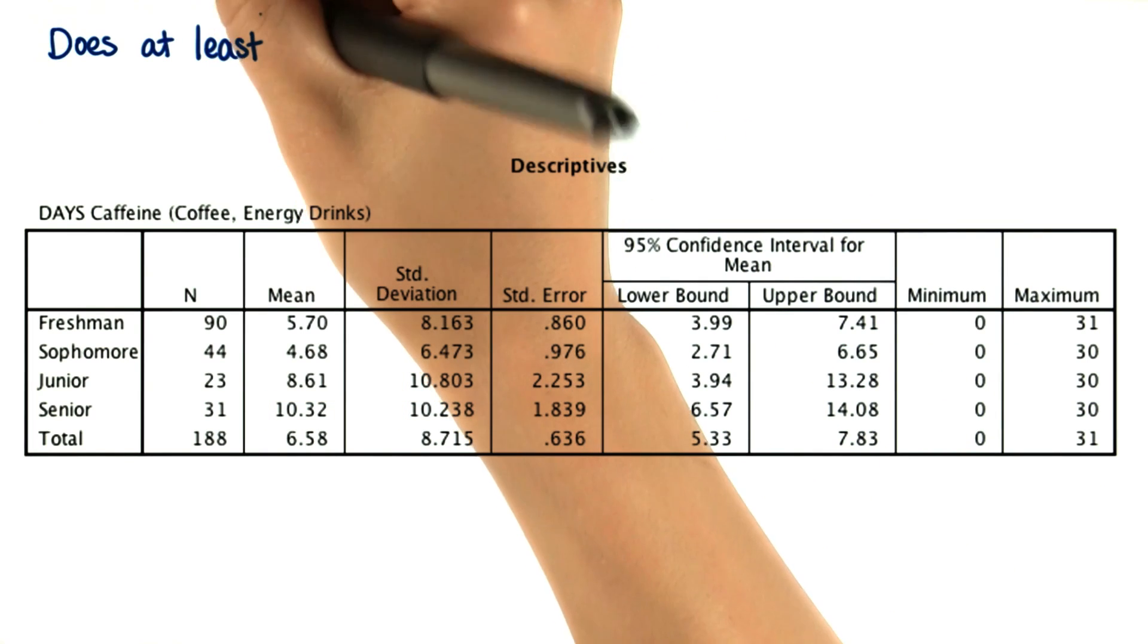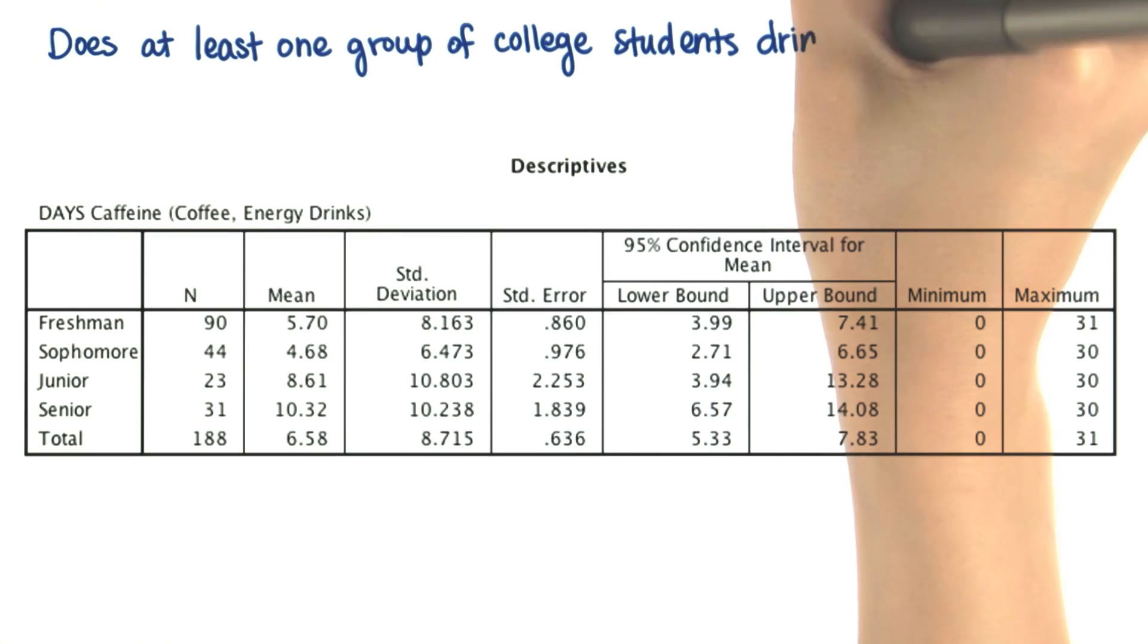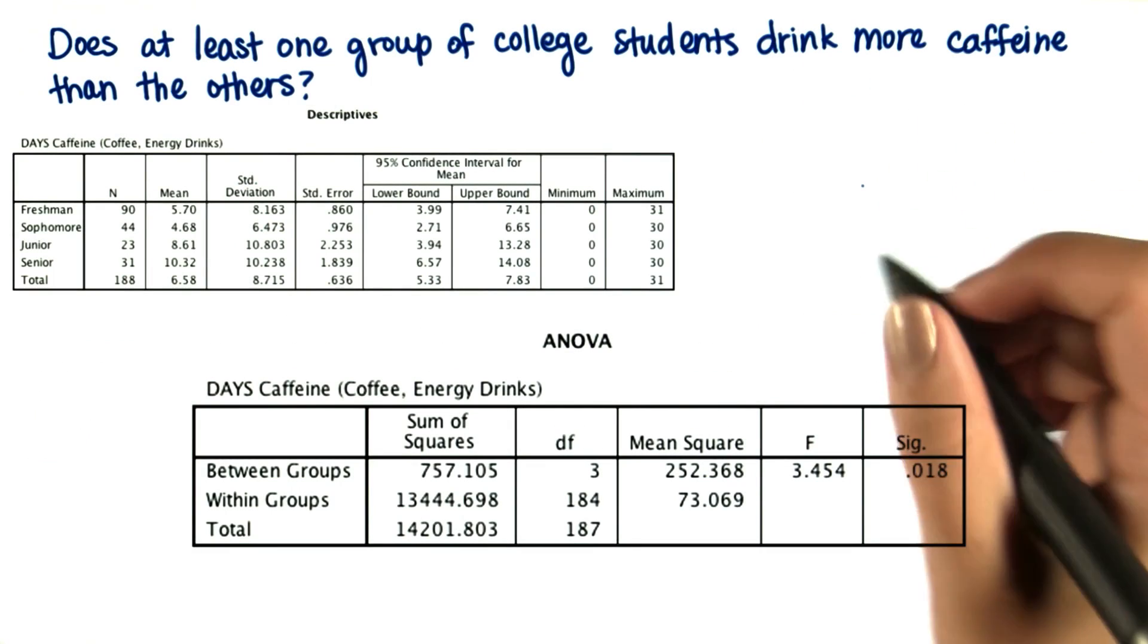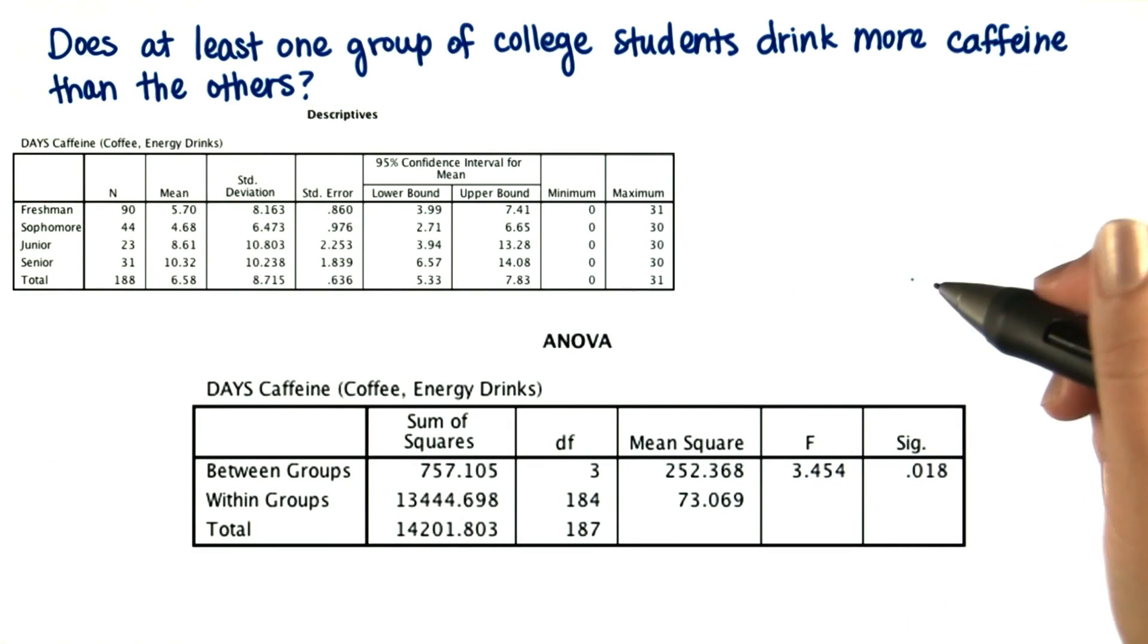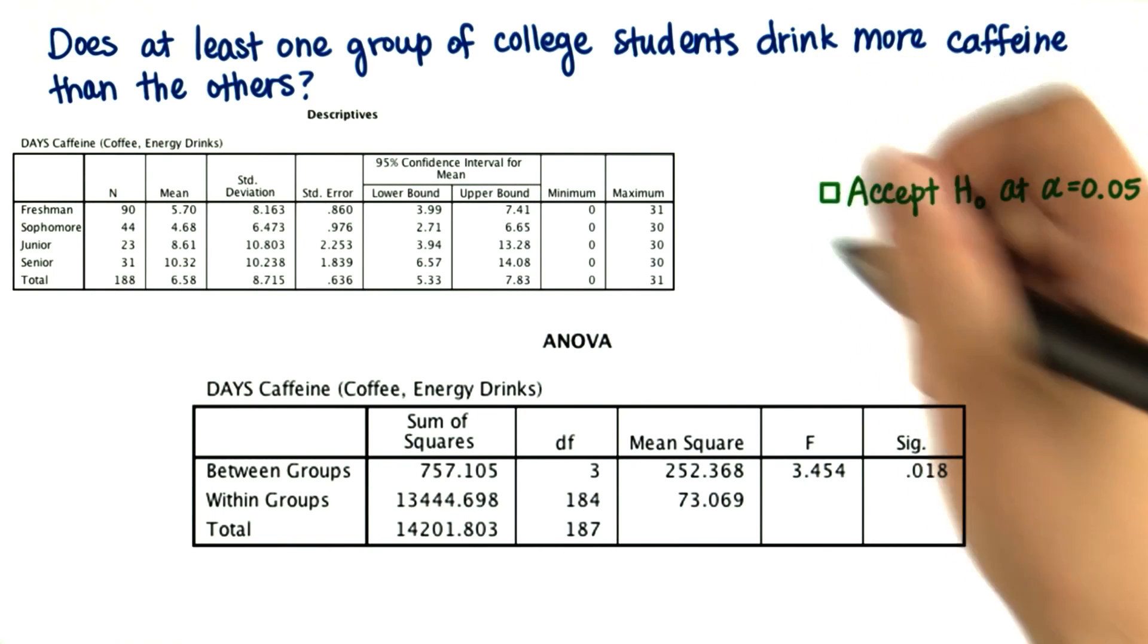We want to know if at least one group of college students drinks more caffeine than the others. Dr. Larraway used the statistical program SPSS to answer this. Here's his ANOVA table output. According to this, which of the following would we do?